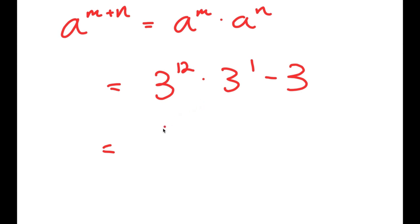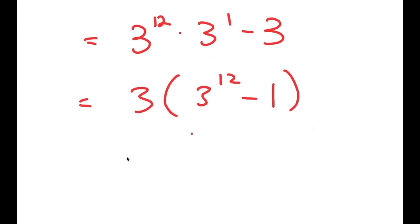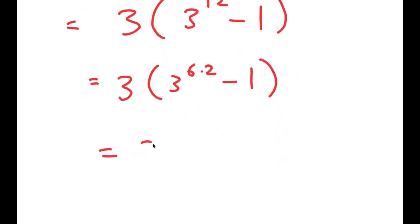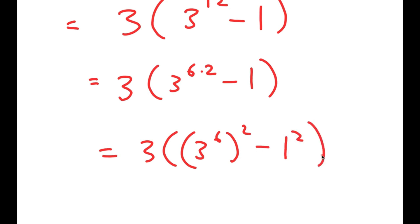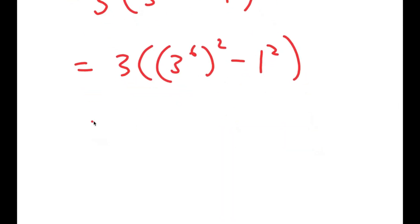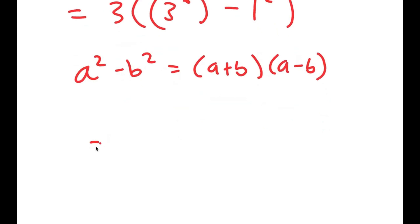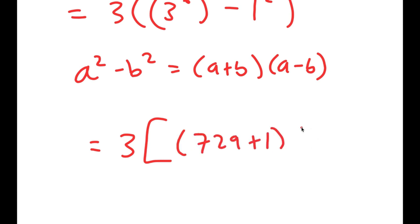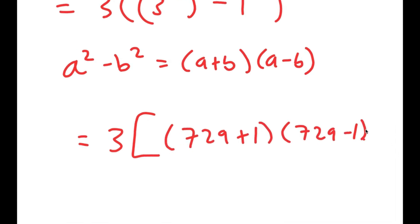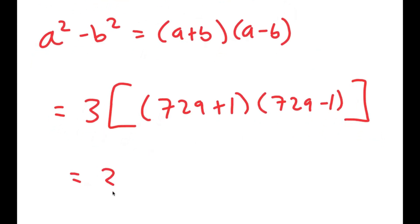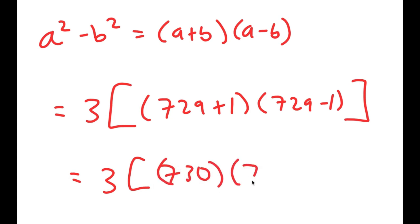From here, I can factor out 3 to get 3 times (3 to the power of 12 minus 1). Now, 3 to the power of 12 I'm going to rewrite as (3 to the power of 6) squared. I can use the property a squared minus b squared equals (a plus b)(a minus b), where 3 to the power of 6 equals 729. So this turns into 3 times (729 plus 1) times (729 minus 1).